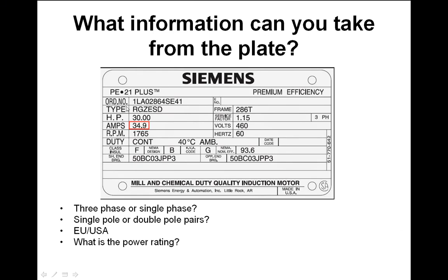Let me take you through these plates. This is a typical plate you'll find on every three-phase motor. You get the manufacturer name and crucial information — it says three-phase here. The voltage also gives an indication: if it's 460 or 415 rather than 230 or 110, that's a three-phase motor. This one is made for the USA — 60 Hz supply. Quick question: would it work on 50 Hz?